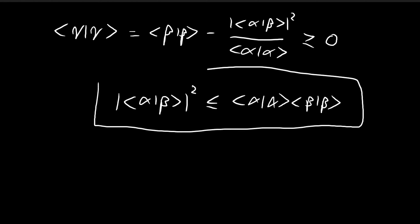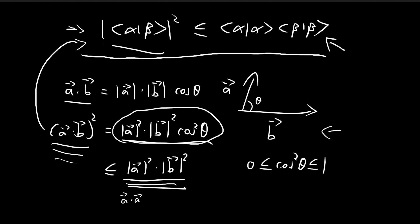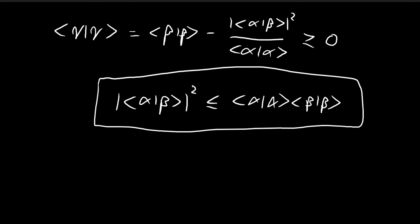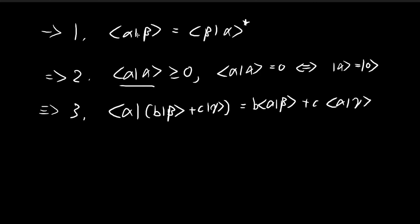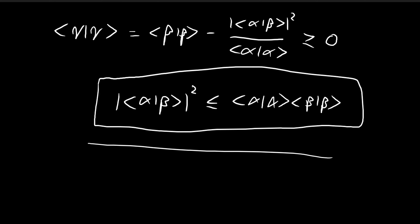The Cauchy-Schwarz inequality isn't really just a geometrical phenomenon found in the case of Euclidean vectors — it is also valid for all other kinds of vectors, because of the restrictions imposed by these three inner product laws. That is why the Cauchy-Schwarz inequality is true.